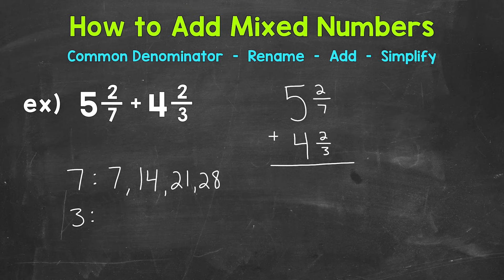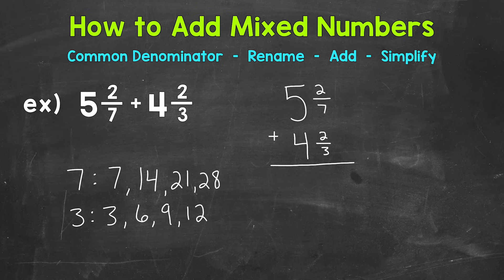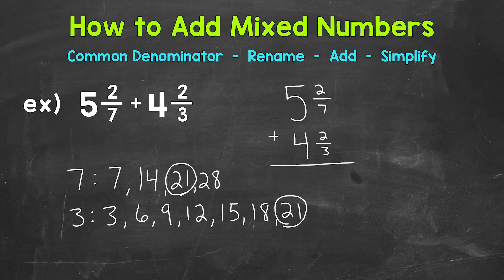Now let's write the first four multiples of 3: 3, 6, 9, 12. We don't have any matches there, so let's extend our lists. For our multiples of 3 we continue: 15, 18 — still nothing in common — and then 21. So 21 is going to be our least common multiple and therefore our least common denominator.